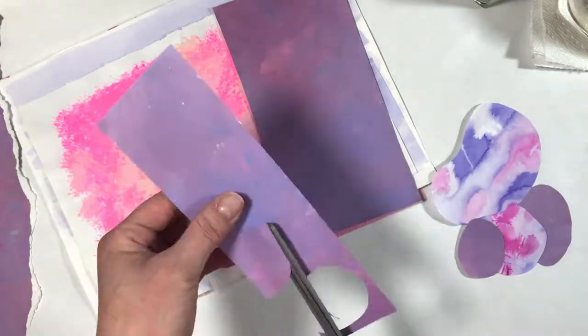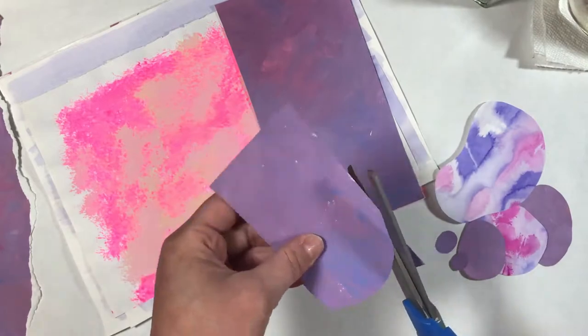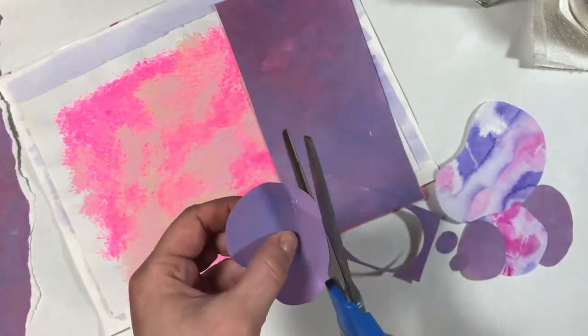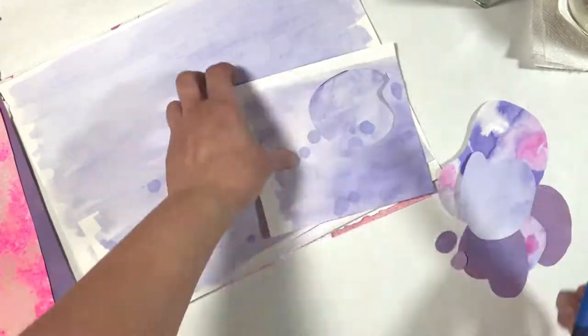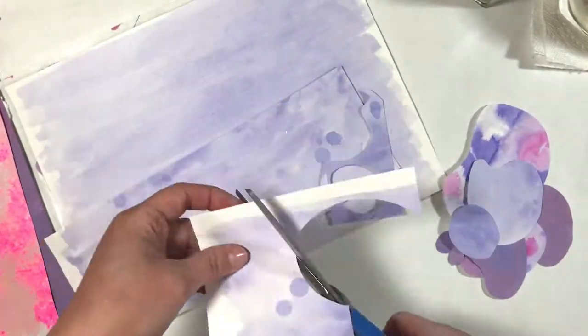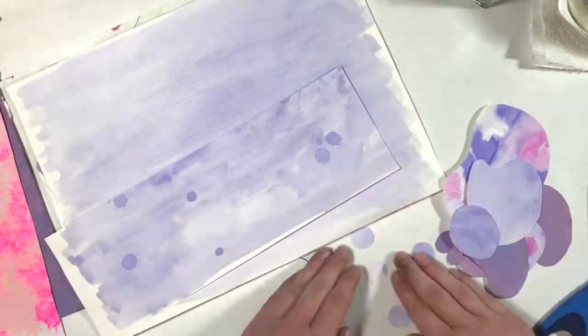Once I have enough of a certain color scheme, I'll cut them out into any organic shape that I want, usually these circular-ish blobs. I also do actual circles because I've got craft punches that I use to make them.